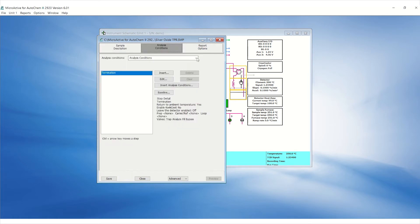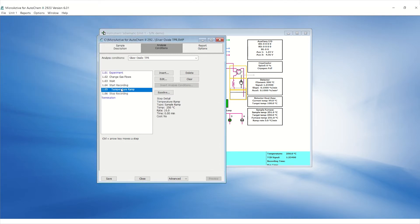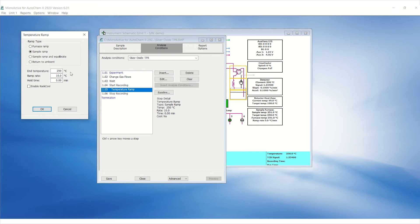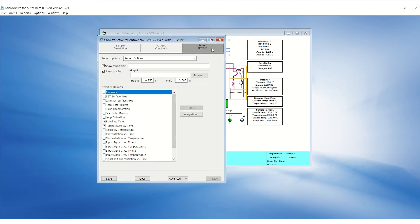Under the Analysis Condition tab, click on the drop-down box and select Silver Oxide TPR. This will load the test method that is pre-saved in the software for your convenience. This test method will flow 10% hydrogen argon at 50 cc per minute with a temperature ramp of 10 degrees Celsius per minute to 250 degrees Celsius. Under the Report Options, turn on the Summary, Signal vs. Time and Concentration vs. Time.